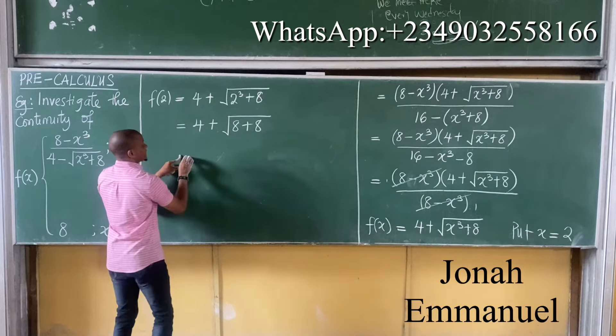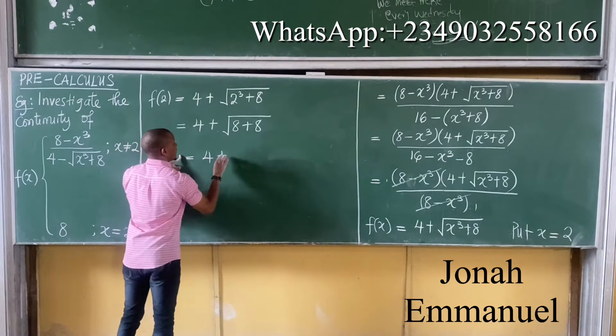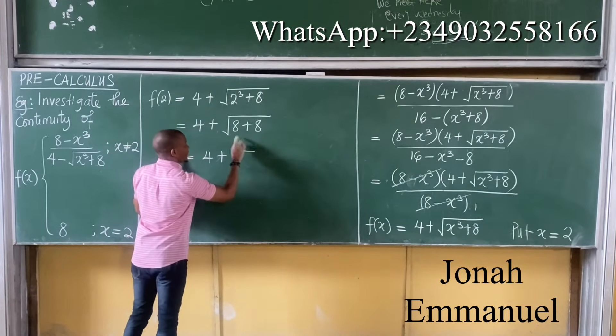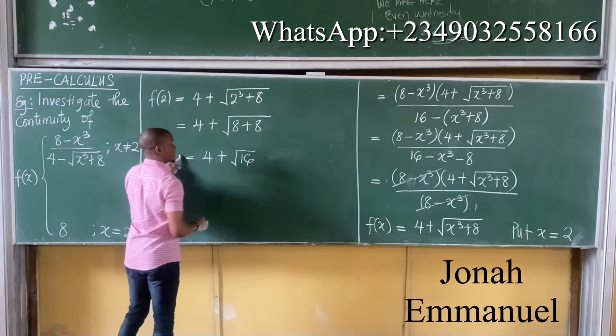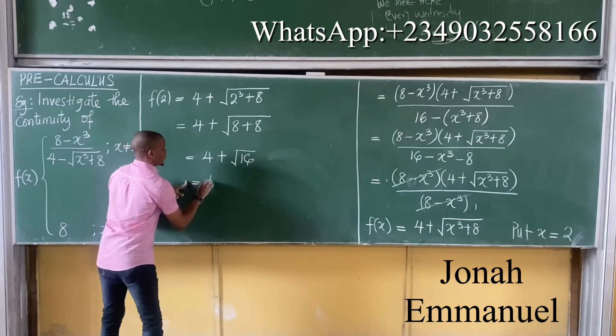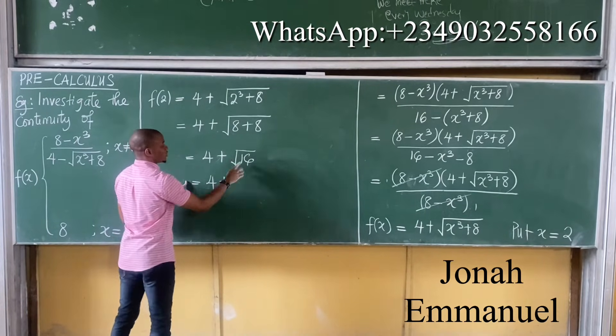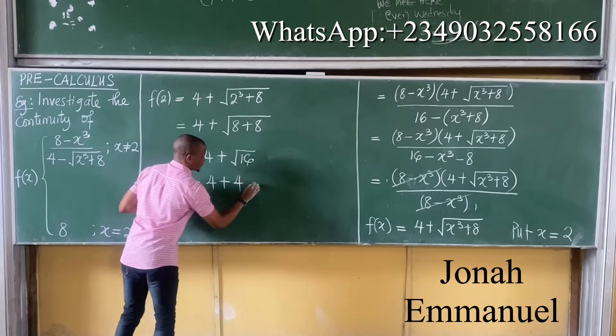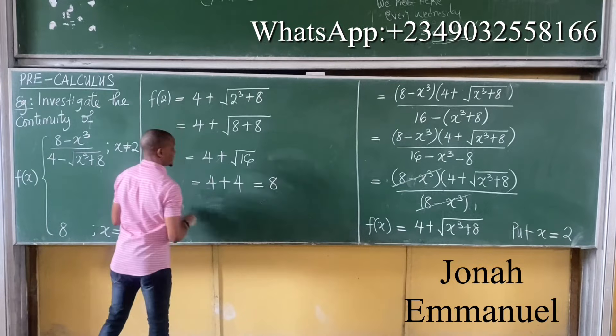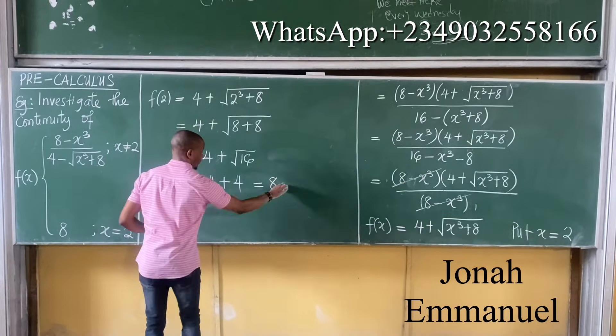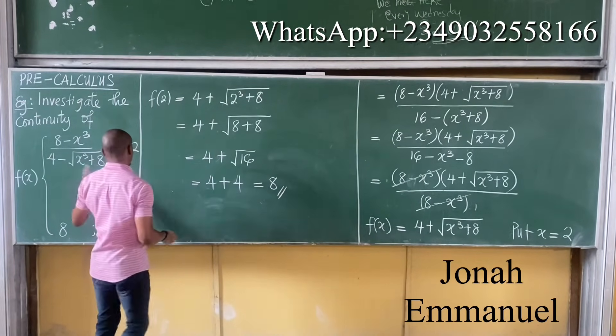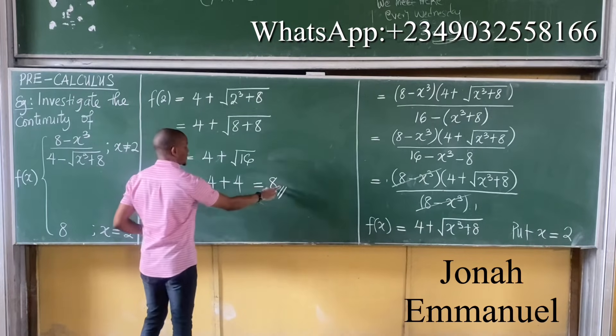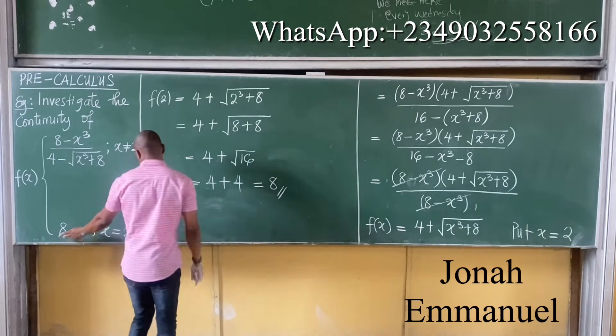So from here, I will have this as equal to 4 plus square root of 8 plus 8 is 16. So it's equal to 4 plus square root of 16 is 4, and that's equal to 8. So observe that after solving, or on taking the limit of this function, my answer becomes 8, same thing that I have here.